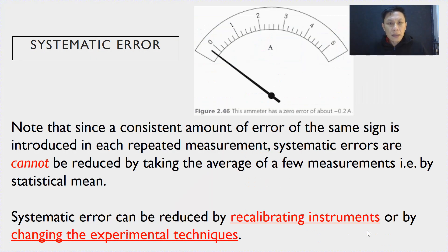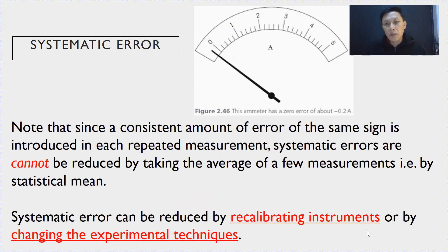Note that since systematic error is always the same magnitude and sign, it cannot be reduced by taking the statistical mean. Systematic error can be reduced by either recalibrating the instrument or by modifying the experimental techniques.